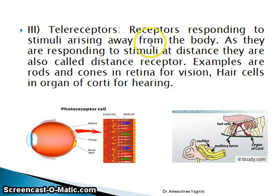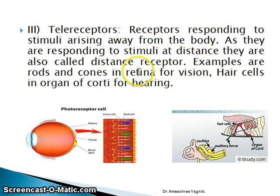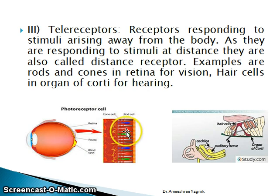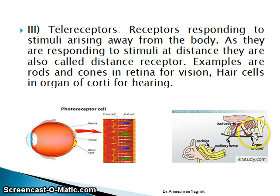Teleceptors respond to stimuli arising away from the body. Because they respond to stimuli at a distance, they are also called distance receptors. Examples include rods and cones in the retina for vision, and hair cells in the organ of Corti for hearing. Rods and cones are the receptors for seeing, and hair cells are useful for hearing.